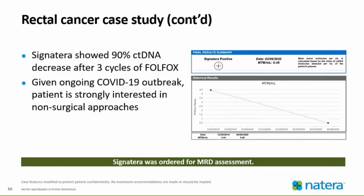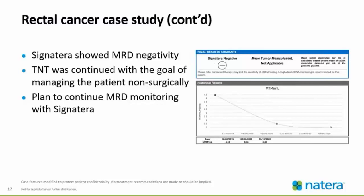While there was certainly positivity — Signatera positive — we can see that the circulating tumor DNA dropped significantly. Given the ongoing COVID-19 outbreak, the patient was strongly interested in non-surgical approaches, so Signatera was ordered to continue monitoring and assessing for residual tumor. Signatera showed MRD negativity, and we can see on the graph that it continued to show no circulating tumor cells. TNT was continued with the goal of managing the patient non-surgically, and the plan was to continue MRD monitoring with Signatera.